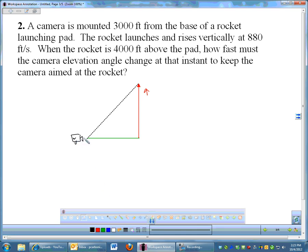We're tracking the launch of this rocket. The camera angle is going to have to change. As the rocket rises, the camera will have to change its angle in order to keep track of the rocket. The question here is saying, when the rocket is 4,000 feet above the ground, how fast is that angle changing so the camera can keep track of the rocket. Our given information - the camera is 3,000 feet from the base of a rocket launching pad. That would be this distance. And I don't think that's going to change. The camera is stationary, the launching pad is stationary. That is 3,000 feet and that's constant.